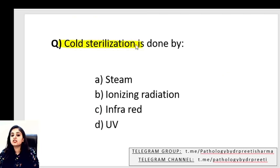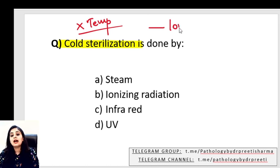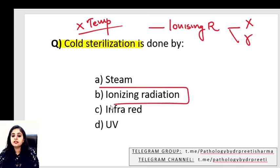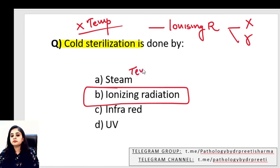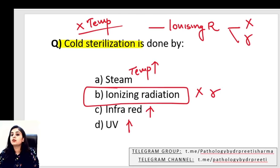MCQ: Cold sterilization is done by? Options include steam, infrared rays, ultraviolet rays, and ionizing radiation. Cold sterilization means no temperature increase. Ionizing radiation — X-rays and gamma rays — does not increase temperature. Steam increases temperature. Infrared and UV rays also increase temperature. So cold sterilization is by ionizing radiation (X-rays and gamma rays).